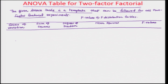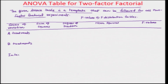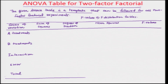The source of variation column lists: A treatments, B treatments, interaction, error, and total. The table has five columns: source of variation, sum of squares, degrees of freedom, mean squares, and f-values.